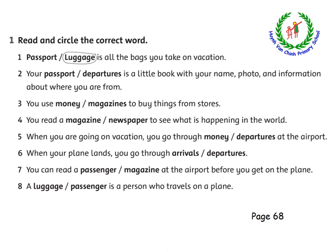Number two: your passport or departure is a little book with your name, photos, and information about where you are from. Number three: you use money or magazines to buy things from stores — chúng ta sử dụng gì đó để mua những thứ từ cửa hàng. Number four: you read a magazine or newspaper to see what is happening in the world. Number five: when you are going on vacation, you go through money or departures at the airport — khi mà bạn đi nghỉ, thì bạn phải đi qua cái gì đó ở sân bay.